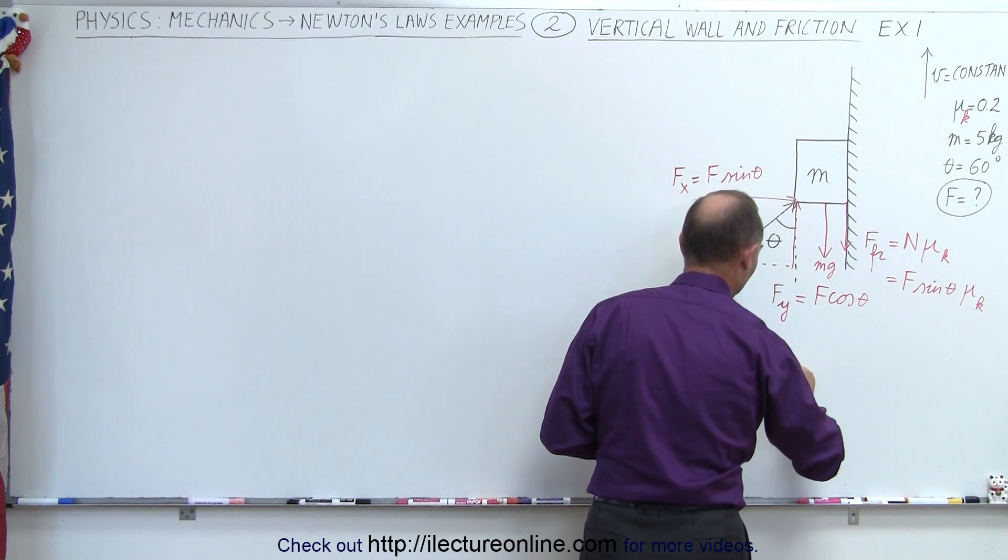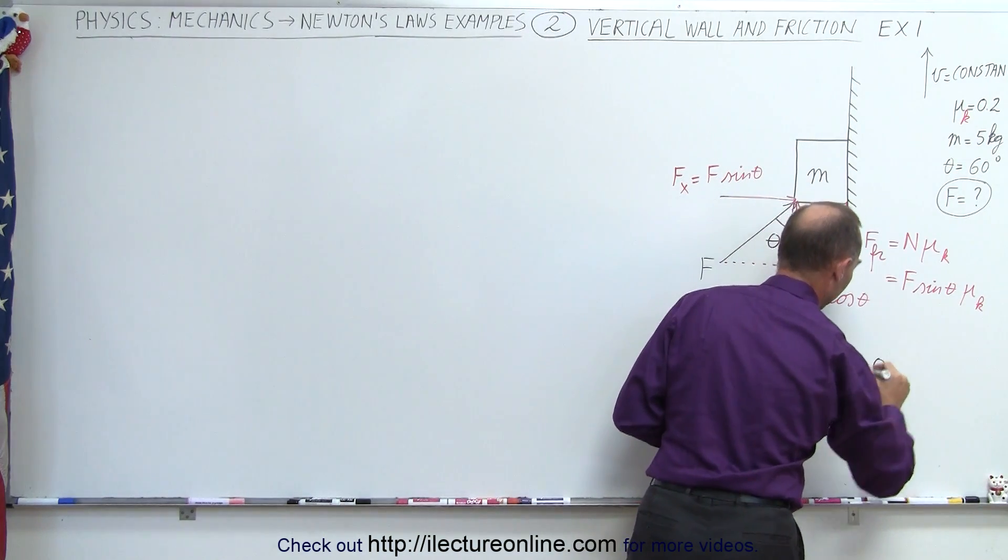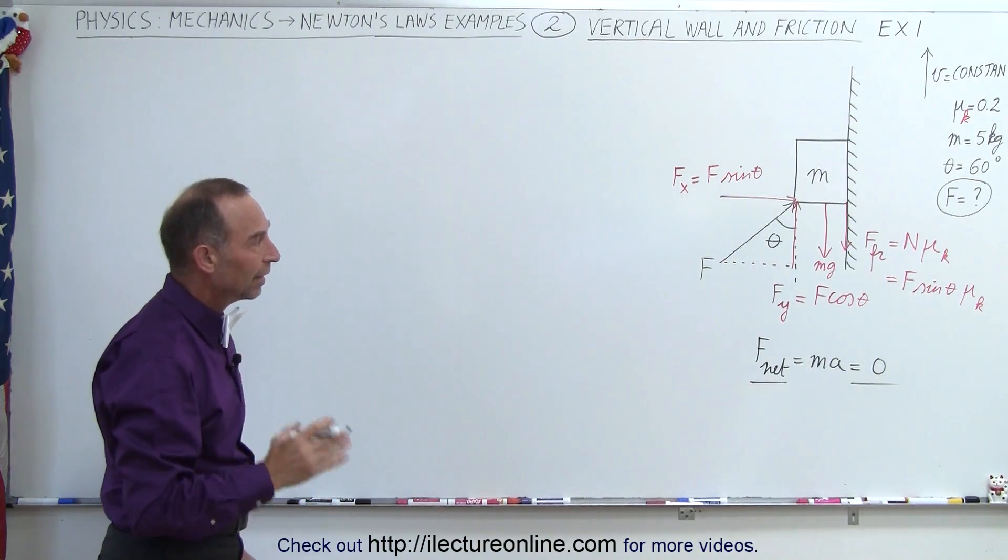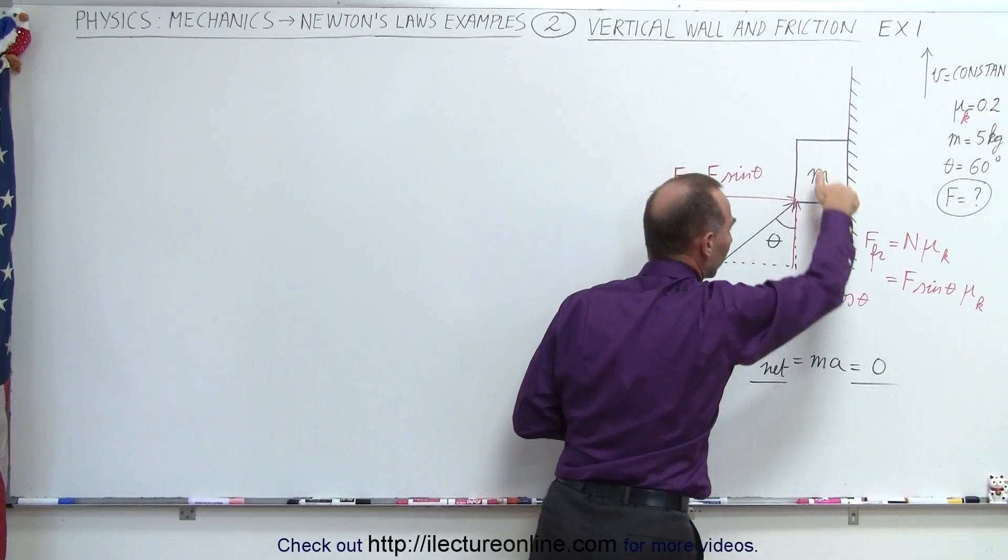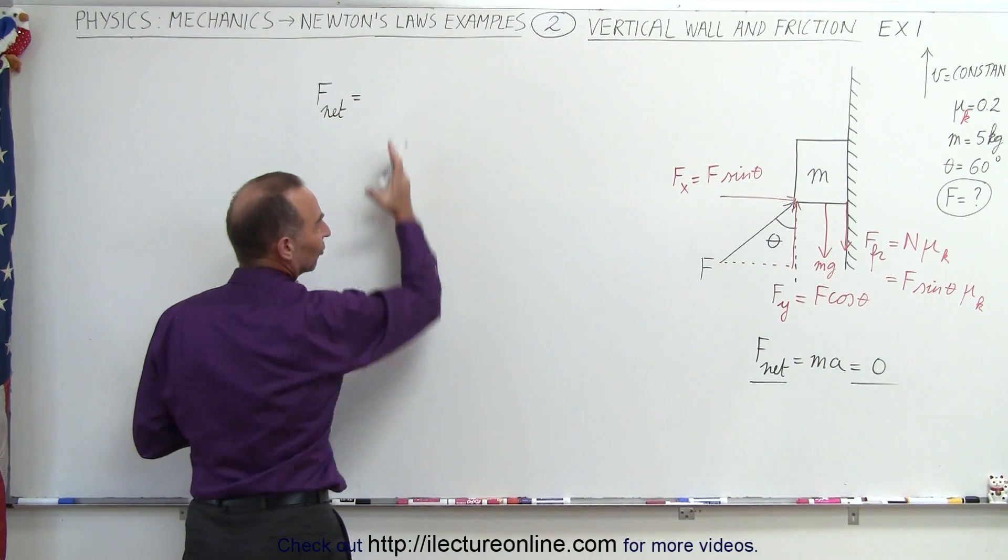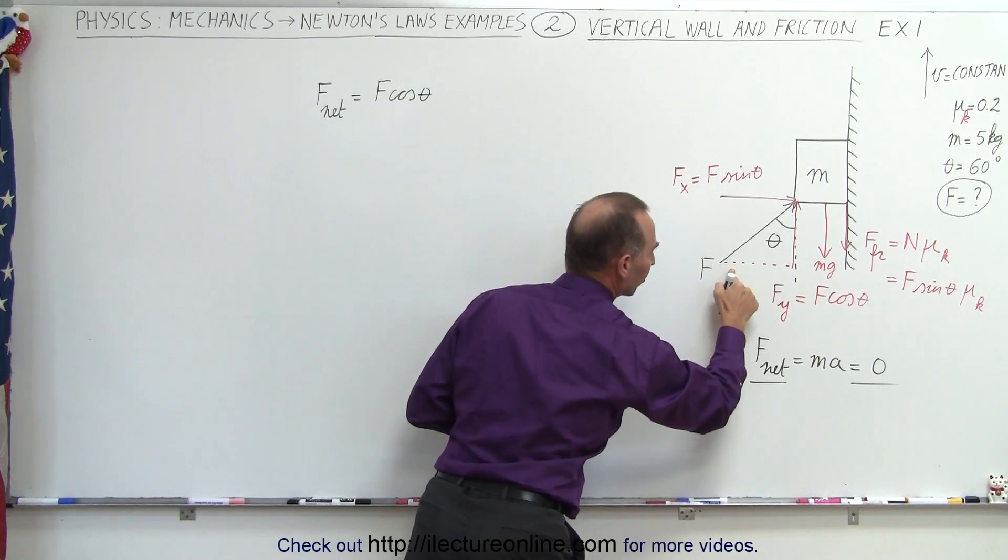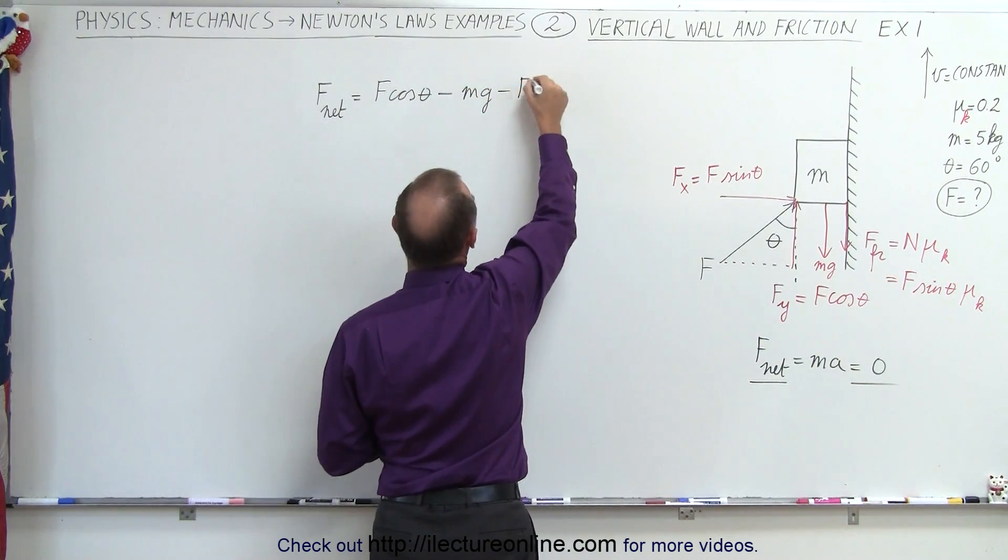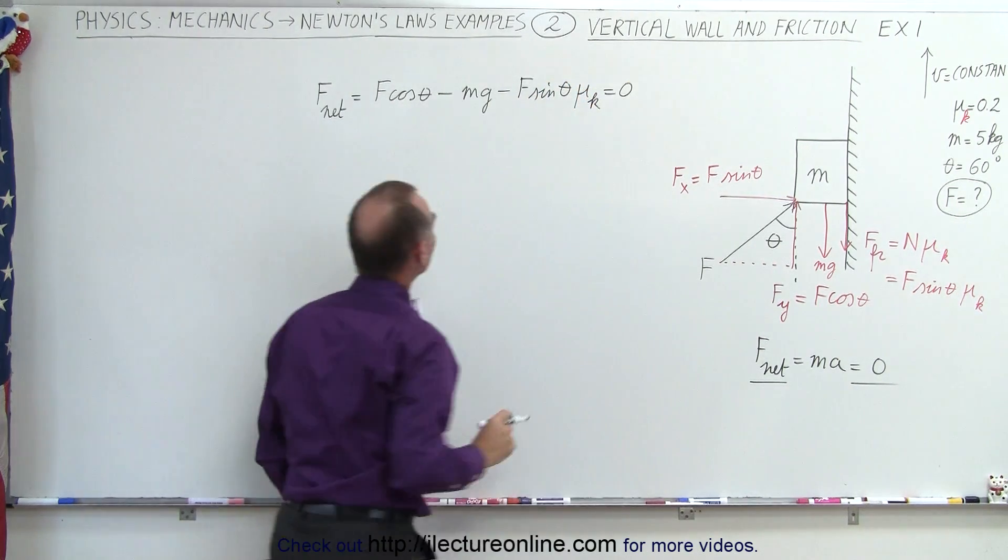And now we can set up the equation, where we know that F net equals the mass times acceleration, but in this case, since we have a constant velocity, we know that's equal to zero, so the net force equals zero. So what is the net force? Well, the net force is all the forces aiding the movement - in this case the velocity going upward - minus all the forces opposing that motion. And so we can say that F net equals all the forces aiding, which is going to be F times the cosine of theta, the vertical component of the force pushing the block, minus the weight of the block, and minus the friction force, which is F sine theta times mu sub k. And of course, since there's no acceleration, that must equal zero.